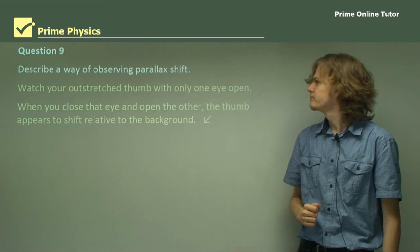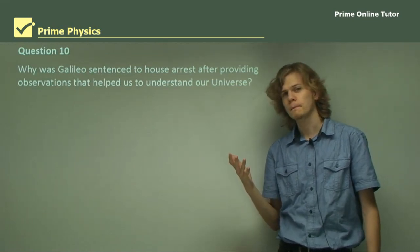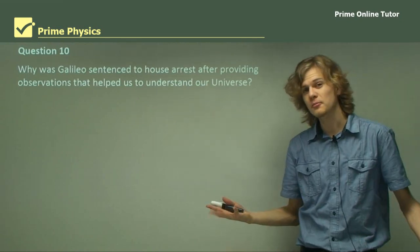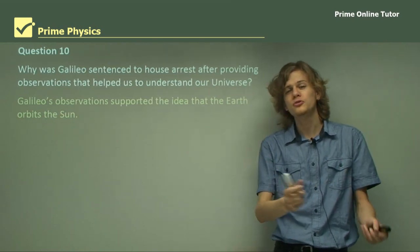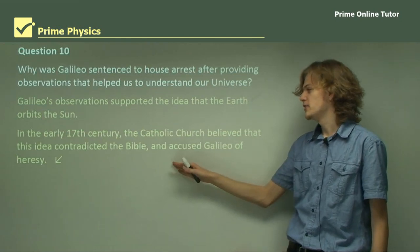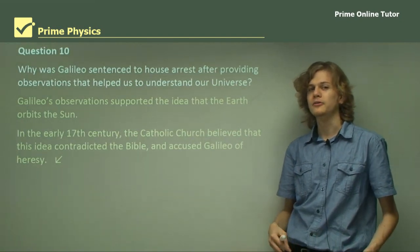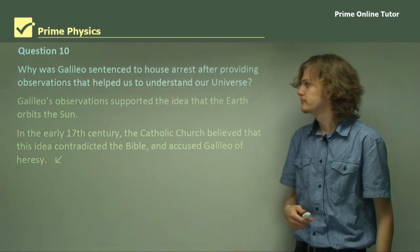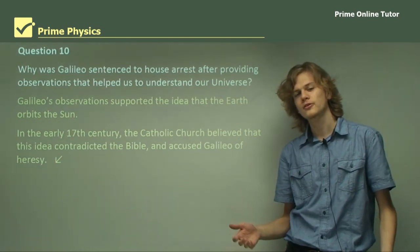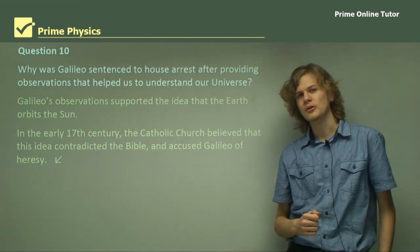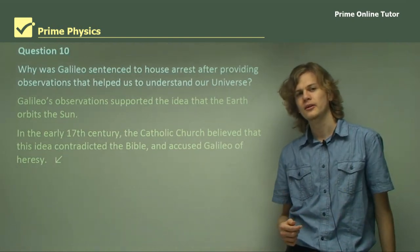Question 10: Why was Galileo sentenced to house arrest after providing observations that helped us understand our universe? The reason was the social and political climate of the time. Galileo's observations supported the idea that the Earth orbits the Sun. In the early 17th century, the Catholic Church believed this idea contradicted the Bible, so they accused Galileo of heresy. He was found guilty of grave suspicion of heresy and sentenced to house arrest. This concludes the questions. In this section, we've learned about the various heliocentric models of the universe, which are more accurate than the geocentric models, as well as the story of Galileo and his conflict with the Church.